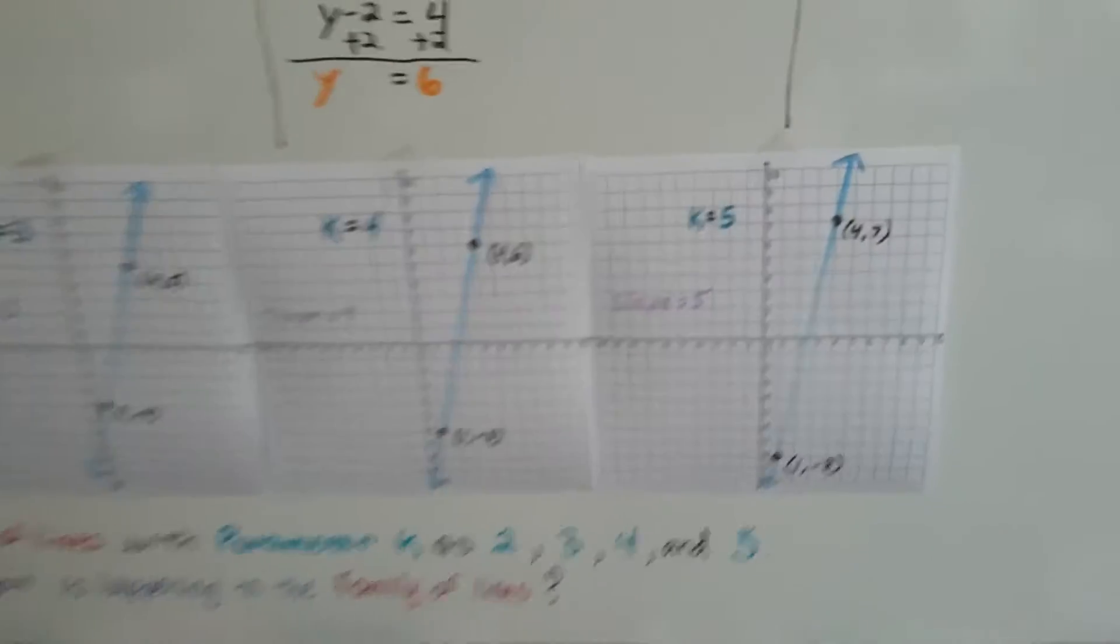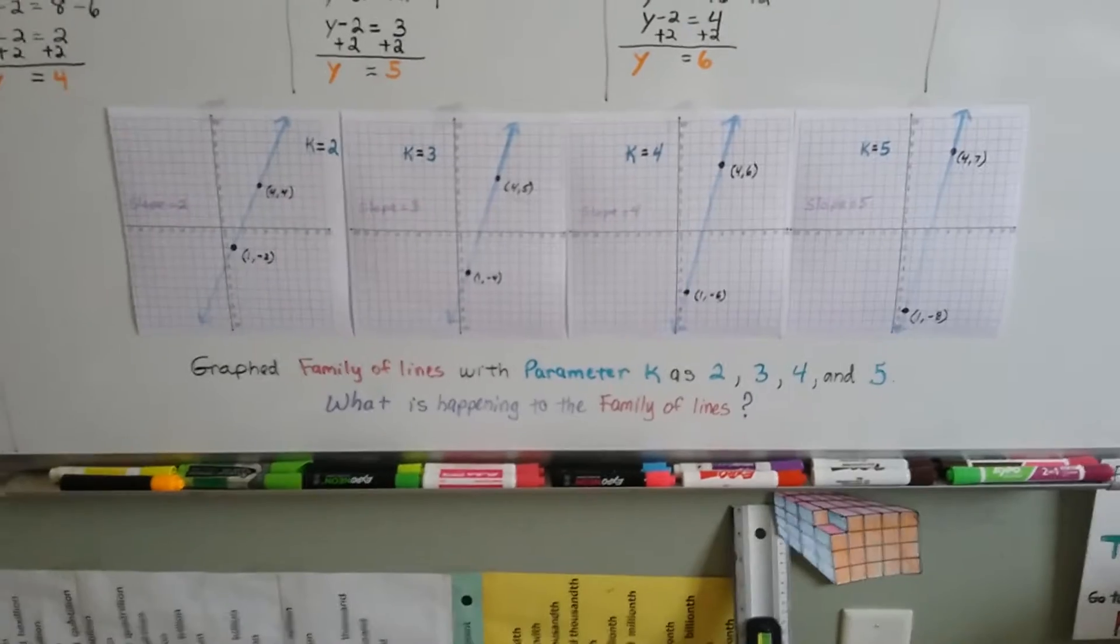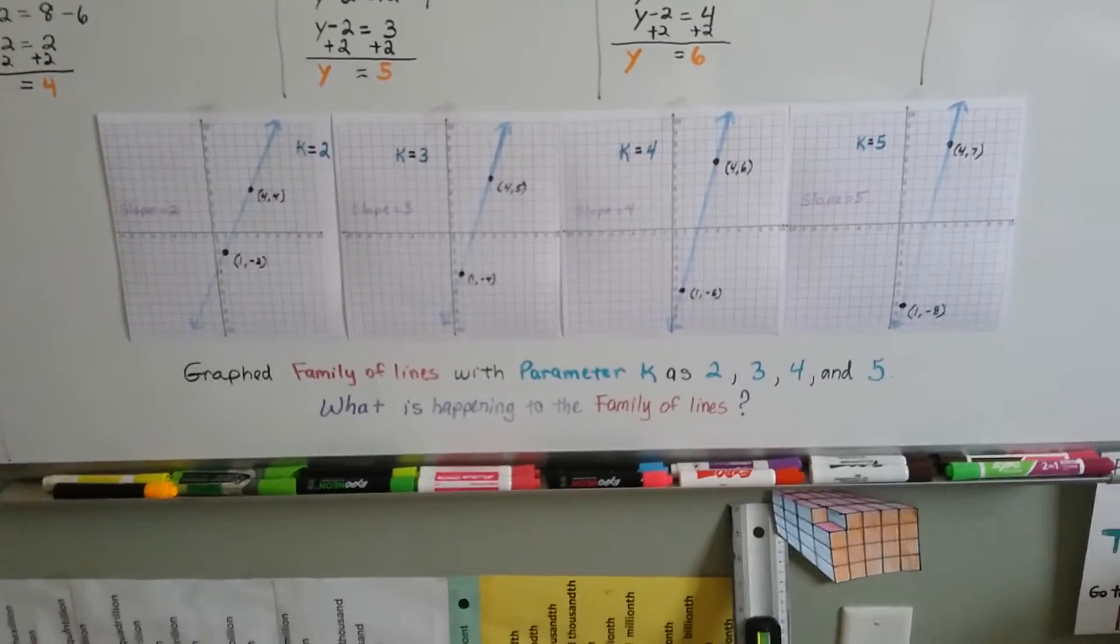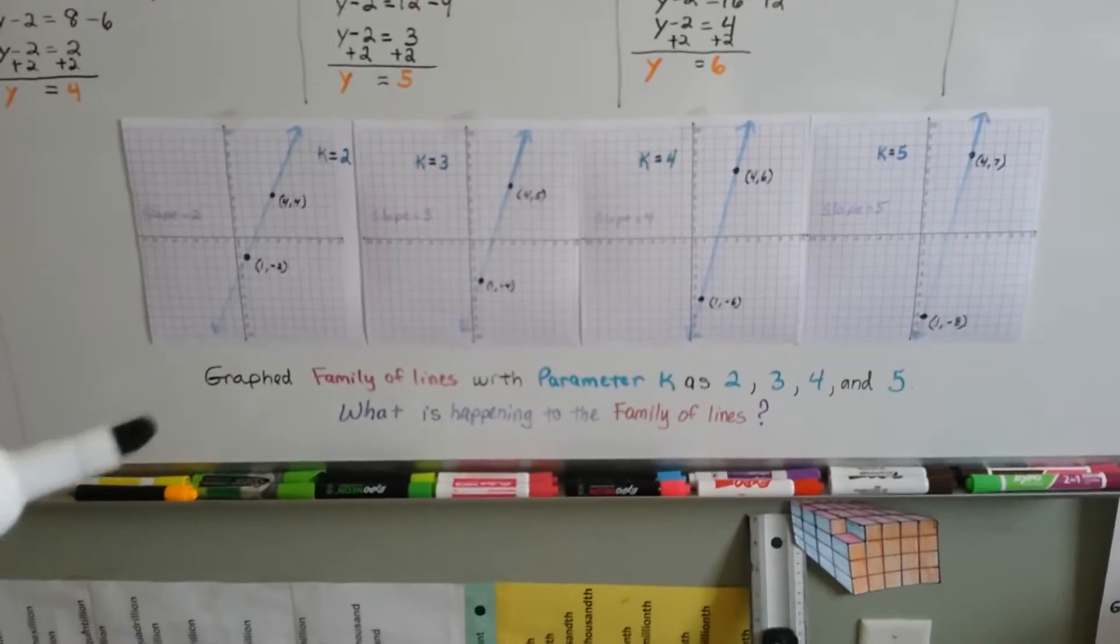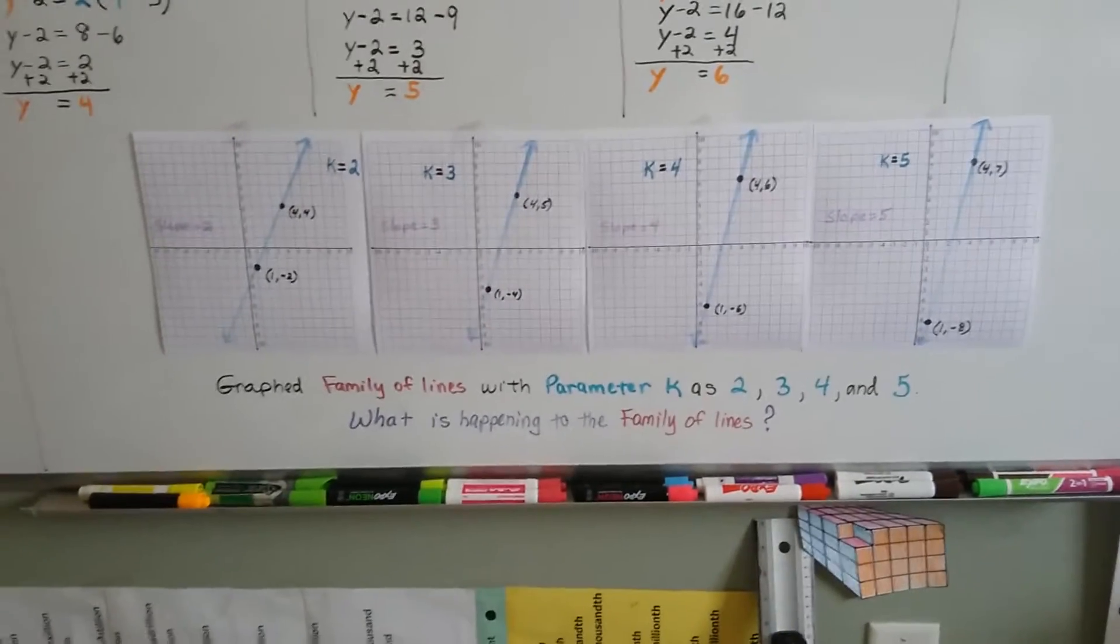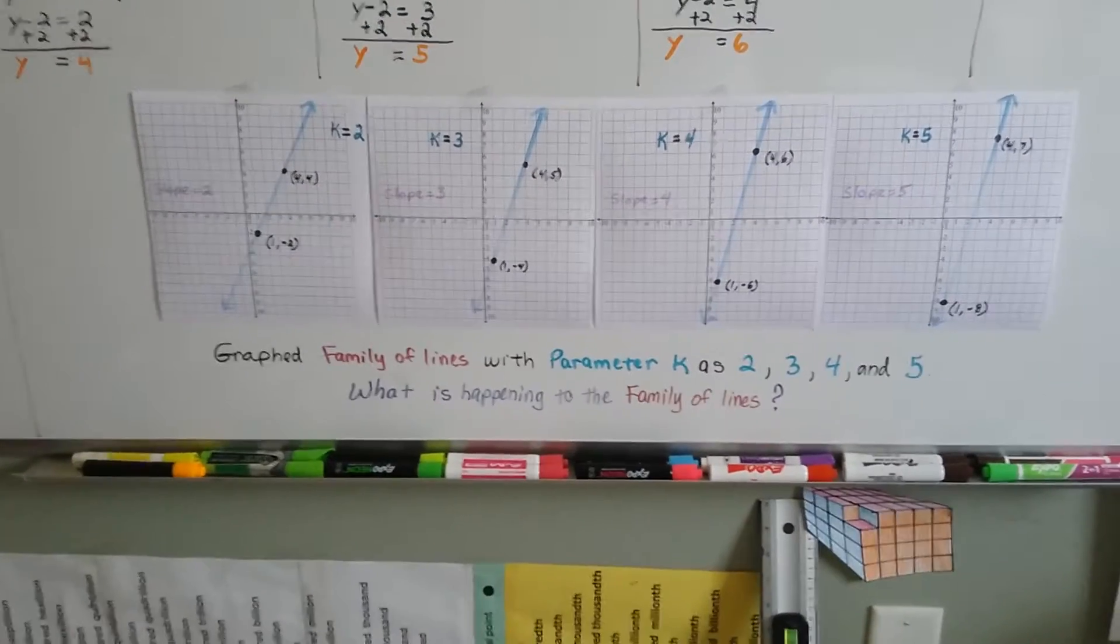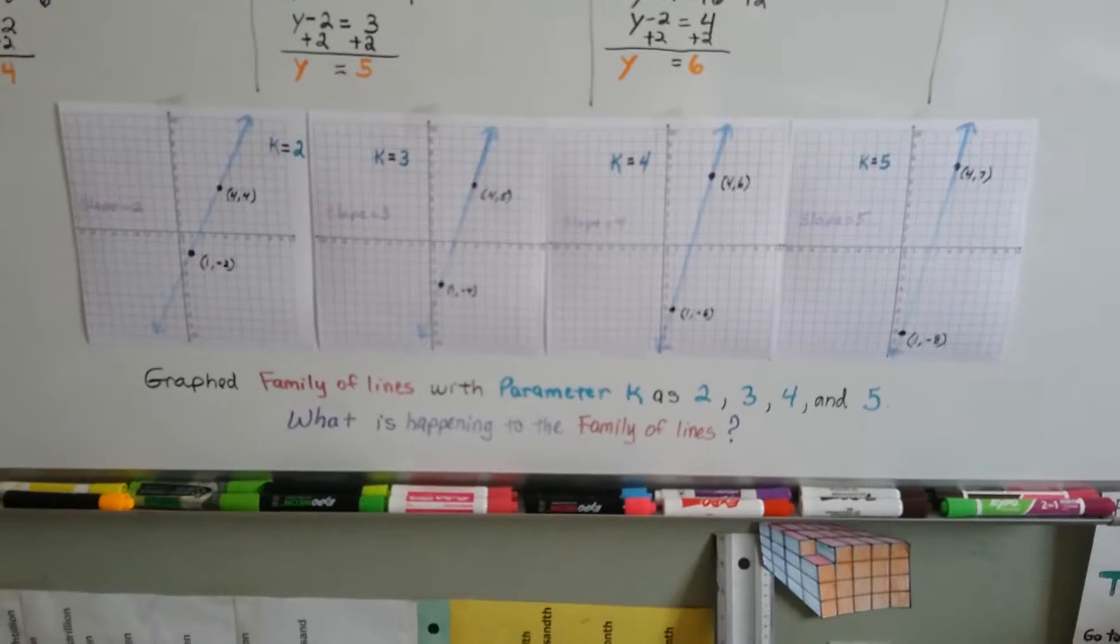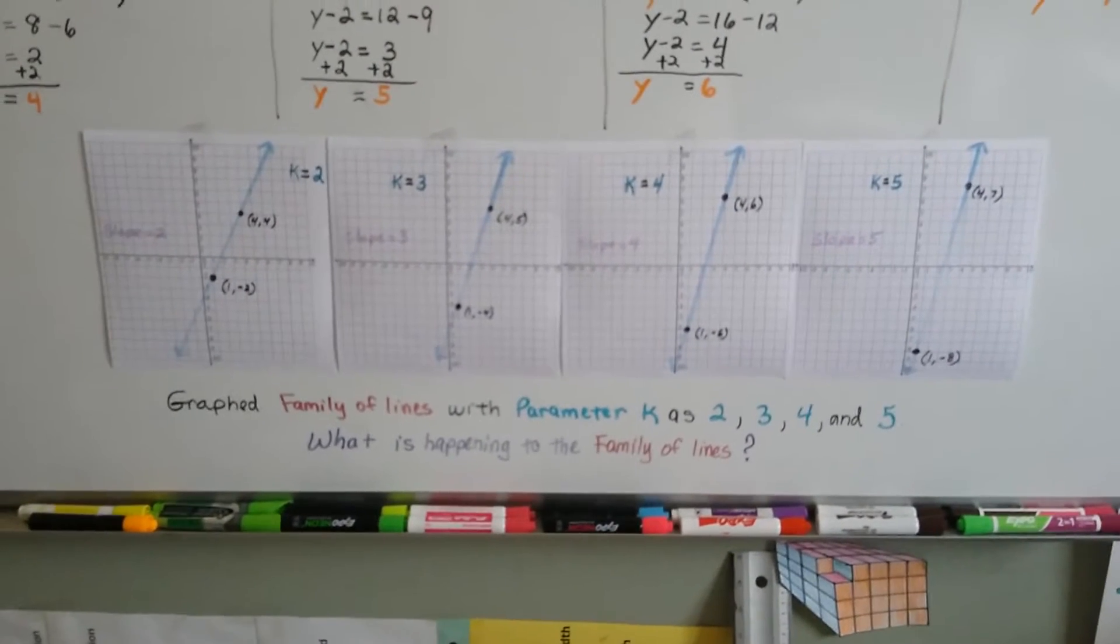Now I'm going to take a step back. I want you to take a look at these lines. Can you see what's happened? Here's k is 2, k is 3, k is 4, and k is 5. Do you see what's happening to the line? As k grows, the line is getting steeper, isn't it? It's going from laying like this and it's slowly moving upward. So the graphed family of lines with parameter k as 2, 3, 4, and 5, it's getting steeper. The slope is changing.